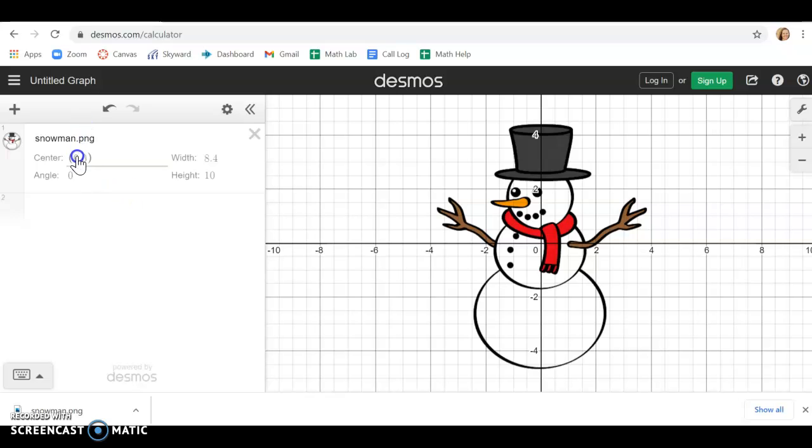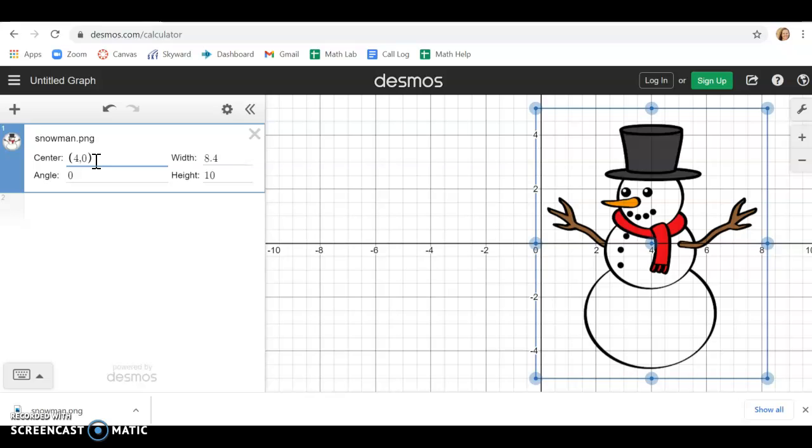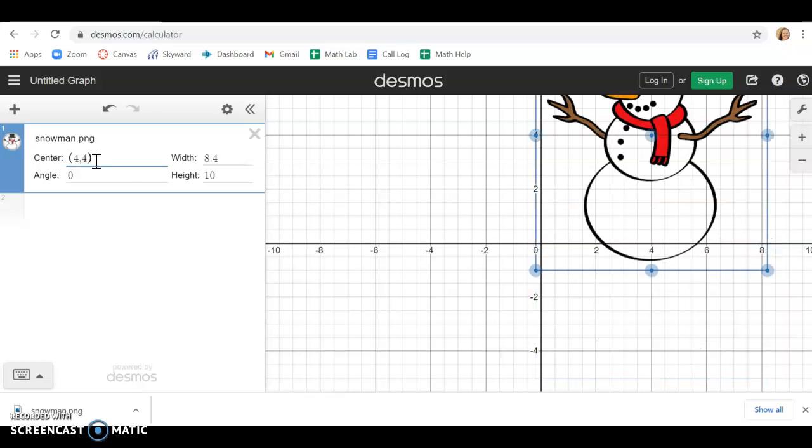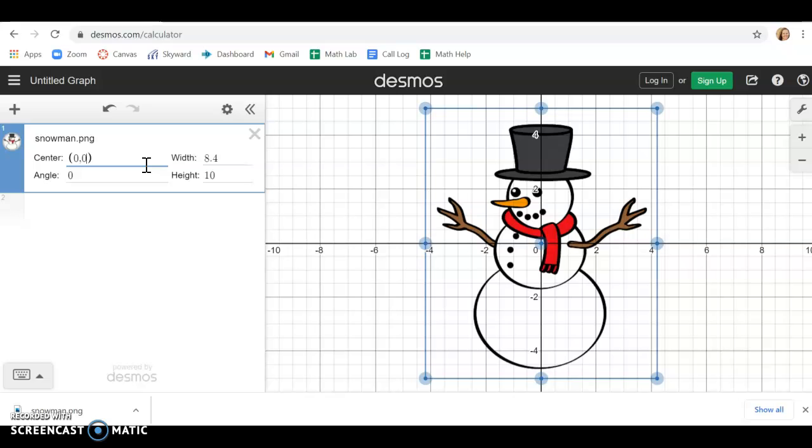Now if you don't want the snowman right in the middle you can change the center of your snowman to 4, 4, wherever you want to put him. For now I'll just leave him right in the middle of my graph.